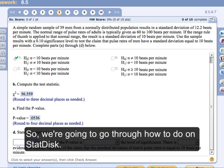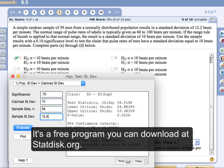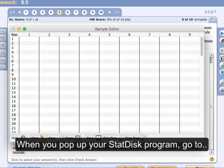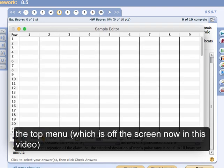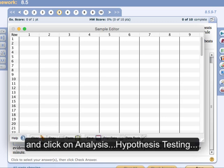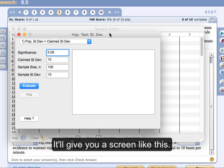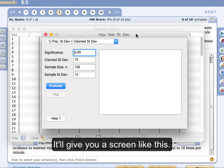That's a free program that you can download at StatDisk.org. And what we want to do is, when you pop up your StatDisk program, you want to go to the top of the menu, which is kind of off the screen right now. You go to Analysis, Hypothesis Testing, and then choose Standard Deviation 1 Sample. And it will give you a screen like this.